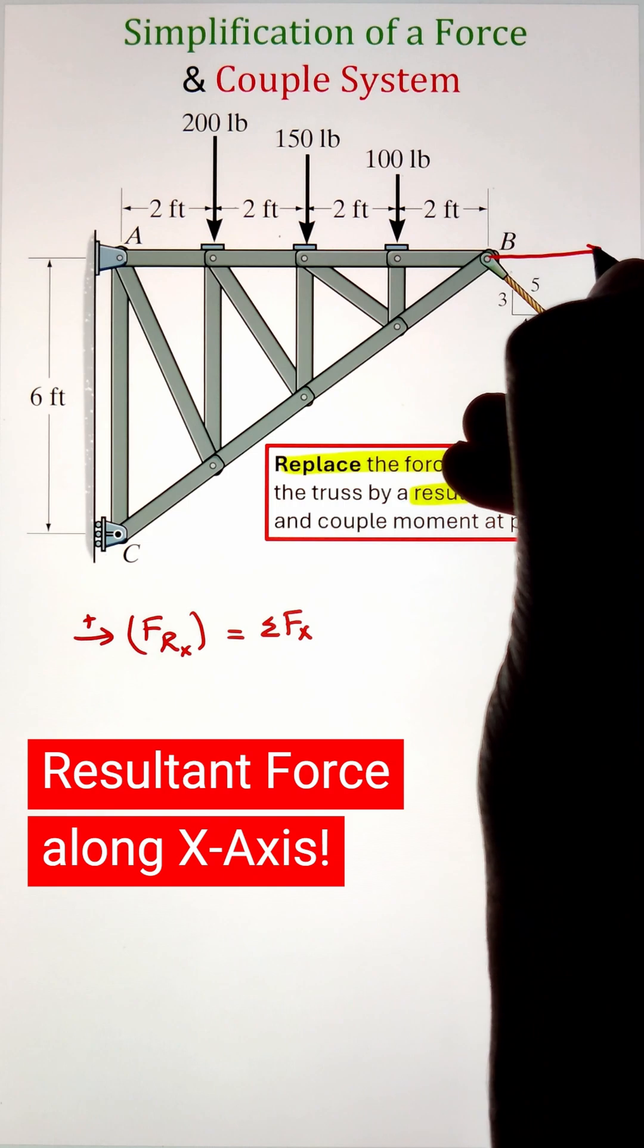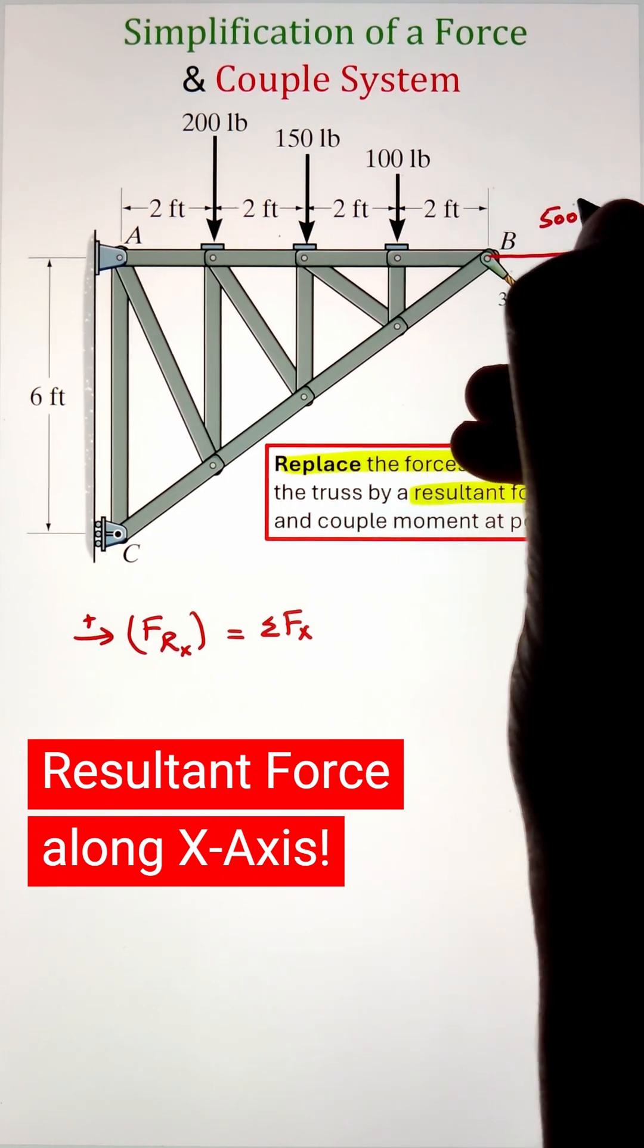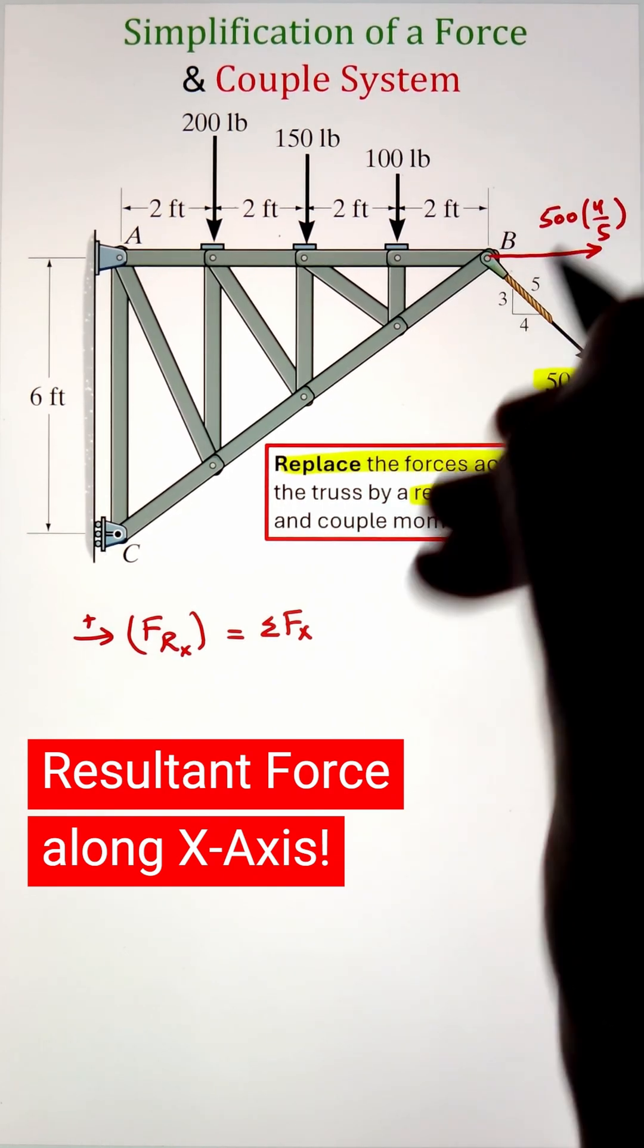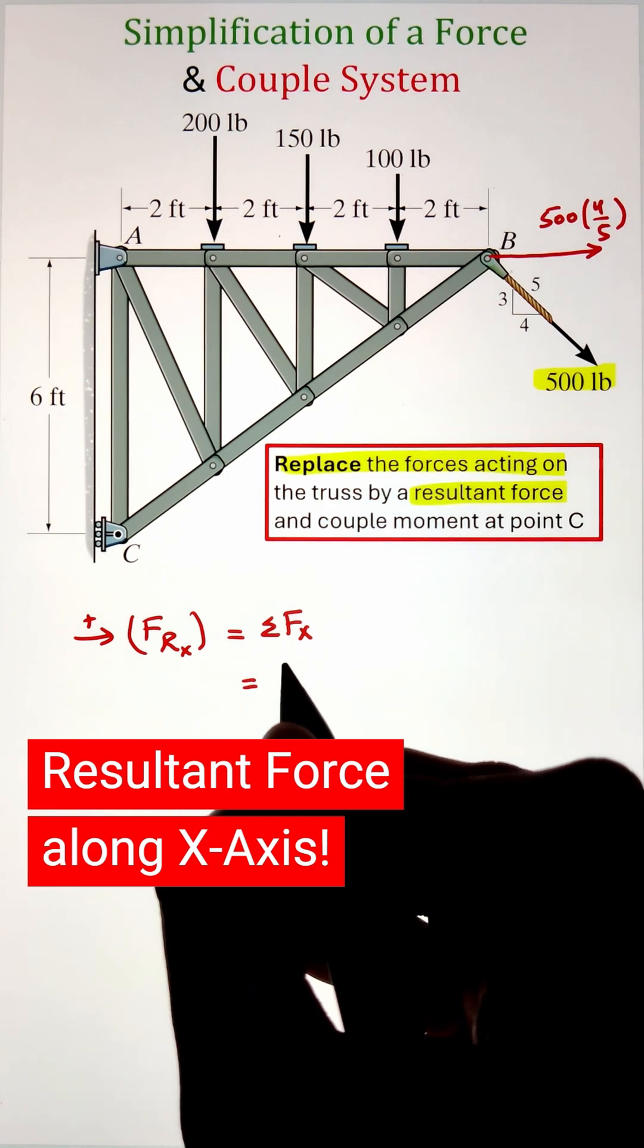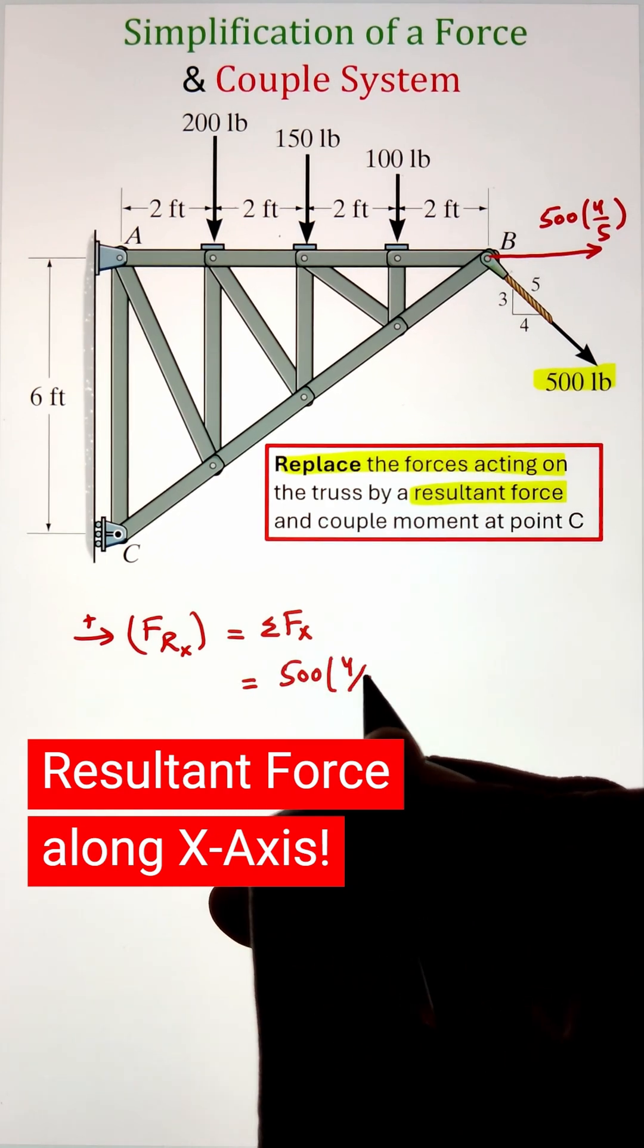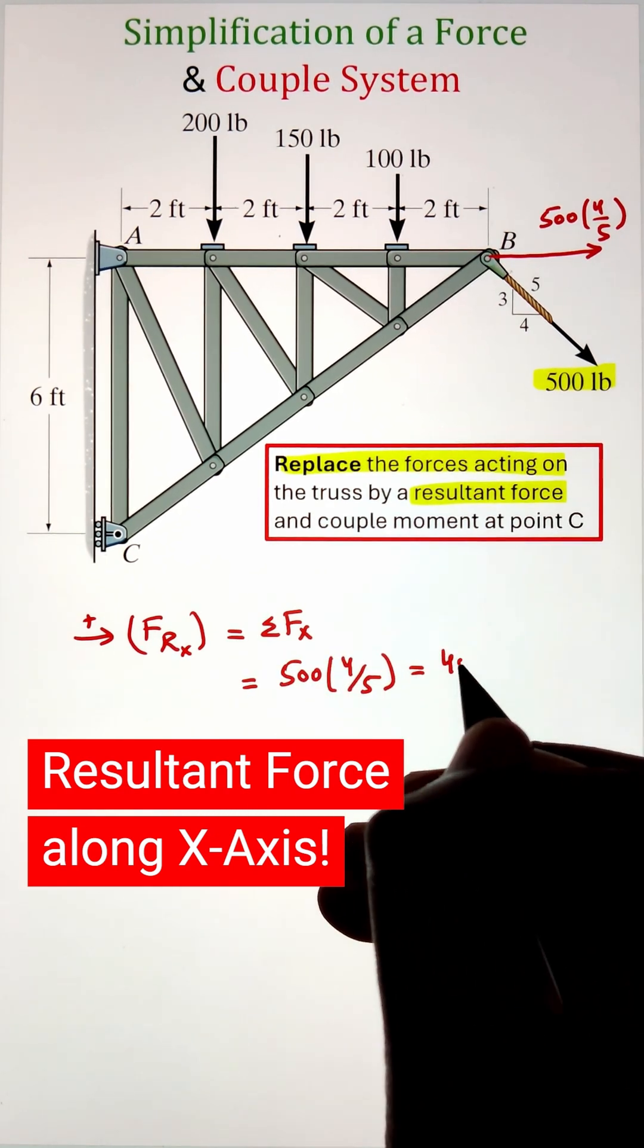To start, our 500 pound force is acting at an angle given by the right angle triangle. To calculate its x component we can multiply the 500 with 4 over 5. This will give us the x component of the 500 force equals to 400 pounds.